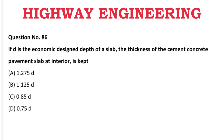Next question: If D is the economic designed depth of slab, the thickness of the cement concrete pavement slab at the interior is — A: 1.275D, B: 1.125D, C: 0.85D, D: 0.75D. The correct answer is C, 0.85D.